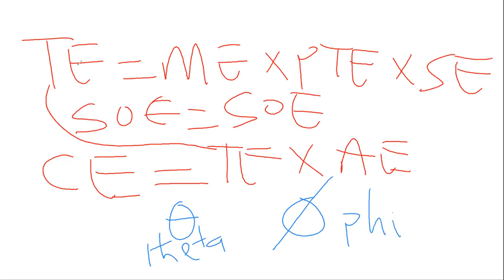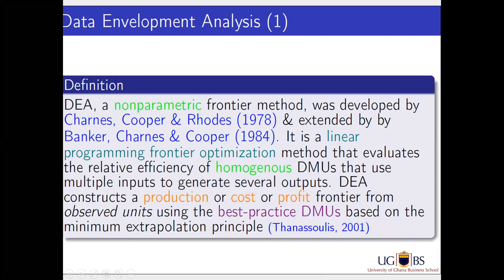Let's define DEA. This is probably the best definition to keep in mind. It is a non-parametric frontier method. Non-parametric means there are no parameters — no coefficients as in regression, where you estimate parameters and test their significance within confidence intervals. There are none of that here.